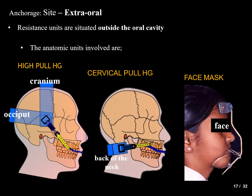Extraoral anchorage units are resistance units situated outside the oral cavity. The anatomic units involved are the cranium, occiput, back of the neck, and the face. A high-pull headgear derives anchorage from the cranium and occiput; a cervical-pull headgear derives it from the back of the neck; and a face mask uses the frontal bone and chin. These augment force and aid tooth movement as extraoral anchorage units.